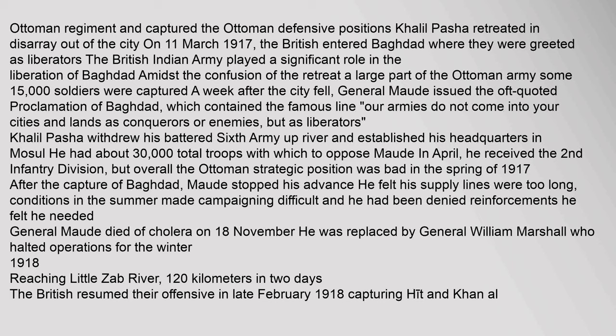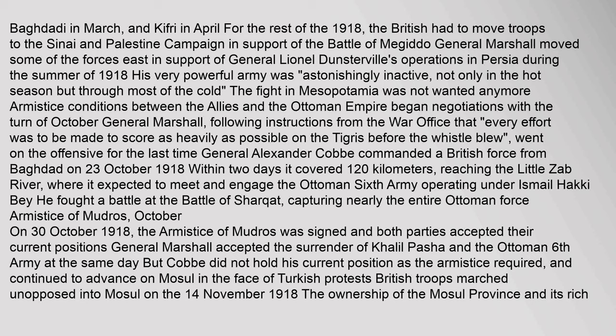Khalil Pasha withdrew his battered 6th Army up river and established his headquarters in Mosul, with about 30,000 total troops. After the capture of Baghdad, Maude stopped his advance, feeling his supply lines were too long and conditions in the summer made campaigning difficult. General Maude died of cholera on 18 November and was replaced by General William Marshall, who halted operations for the winter. In late February 1918, the British resumed their offensive, capturing Hit and Khan al-Baghdadi in March, and Kifri in April. For the rest of 1918, the British had to move troops to the Sinai and Palestine campaign in support of the Battle of Megiddo.